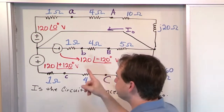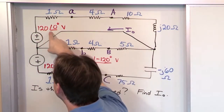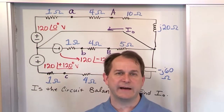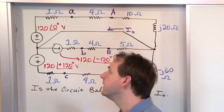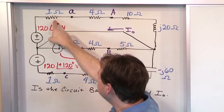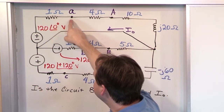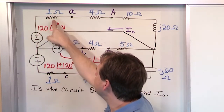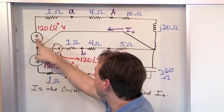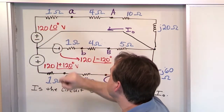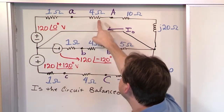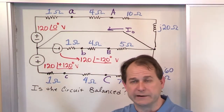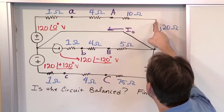For Phase A, the source is 120 at an angle of zero degrees. That's pretty typical — you're going to see Phase A having a zero-degree reference. This resistor before the lowercase a is implying the source impedance; this is the impedance of the source. And this element between the letters here is the impedance of the line, the actual transmission line.